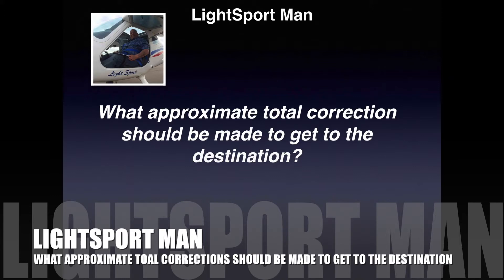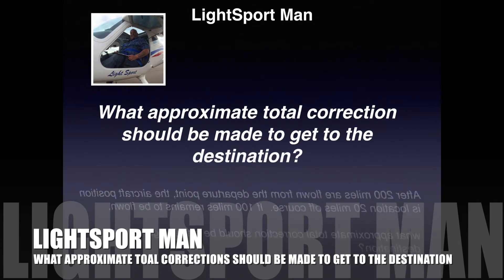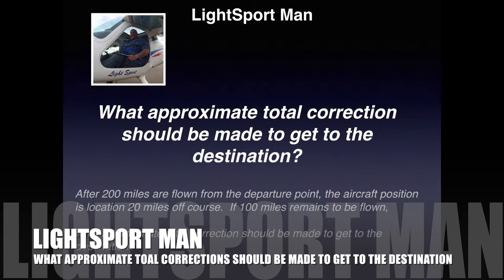One of the questions is: what approximate total correction should be made to get to the destination? You might not understand what this means yet, but let's go over how the question will look on the FAA test. After 200 miles are flown from the depart point, the aircraft position is located 20 miles off course. If 100 miles were made to be flown, what approximate total correction should be made to get to the destination?